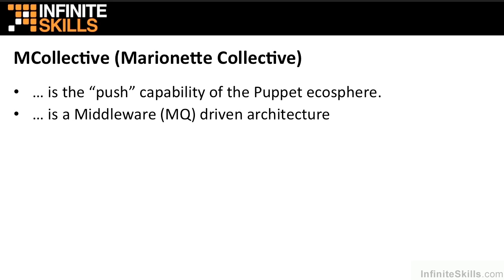mCollective is a middleware or message queuing driven architecture. The basic components of mCollective are mCollective servers, which are essentially the equivalent of a puppet agent. So a machine using mCollective and puppet will have two pieces of software installed on it.